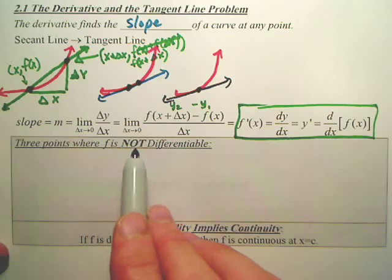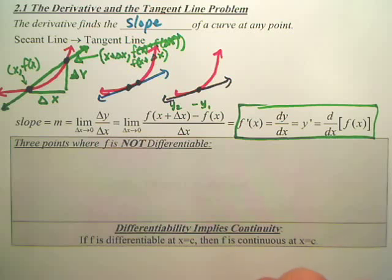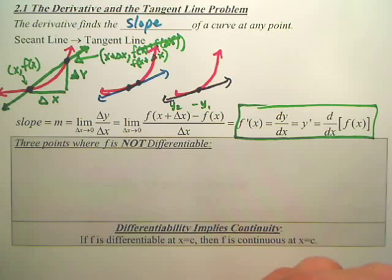Points where f is not differentiable. Differentiable means where f does not have a slope. f means a function.